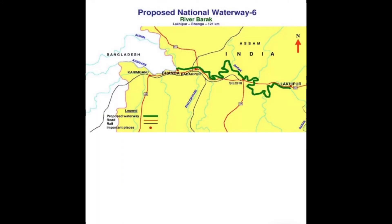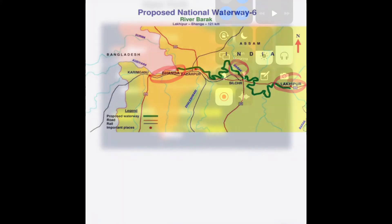Another important national waterway in the northeast runs from Lakhipur to Banga on the Barak river. It connects important northeastern states — Assam, Nagaland, Mizoram, Manipur, Tripura, and Arunachal Pradesh — and helps in cargo transportation.